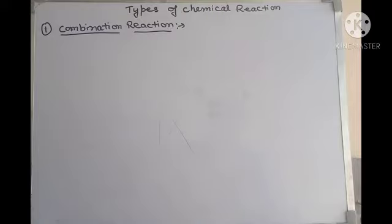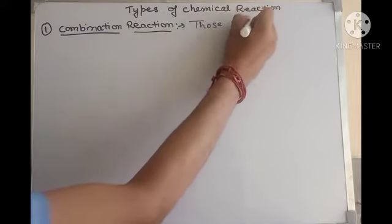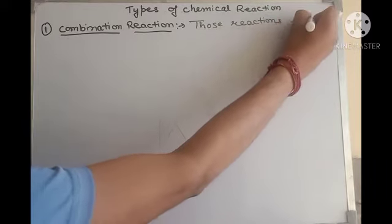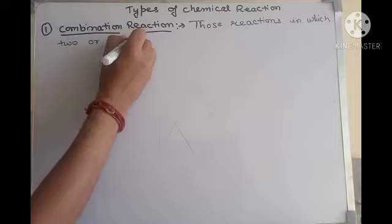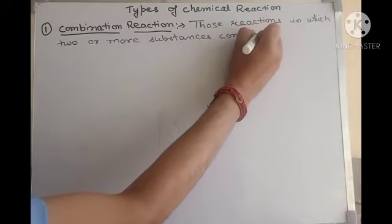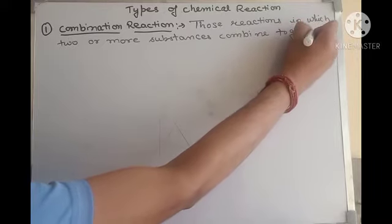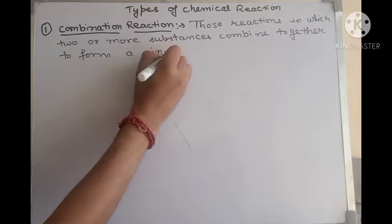Good morning students. In today's lecture we will talk about types of chemical reactions. The first type is combination reaction — those reactions in which two or more substances combine together to form a single substance.